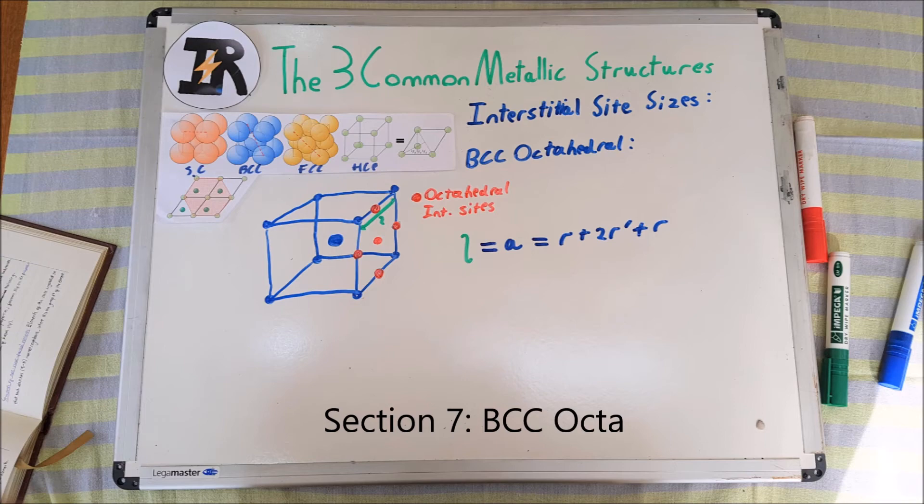The octahedral hole that will be the focus of this derivation is the one at the top of the right-hand face. The octahedral positions lie midway along the sides and at the centers of the faces of the BCC structure. The distance L is the distance between the two nearby BCC matrix atoms at the corners of the unit cell. This distance is also equal to 2R + 2R' as the octahedral hole site makes contact with those two BCC matrix atoms.